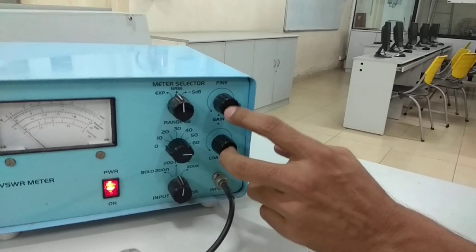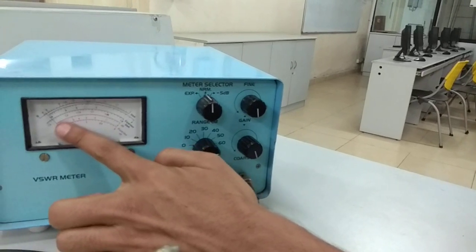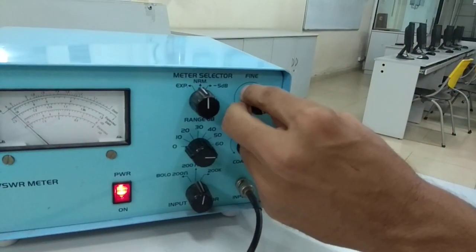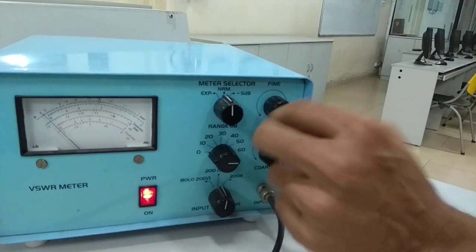These two are to maintain the gain. If we are not able to fix the knob at the higher position, we will be rotating this gain knob and we can make fine tuning by adjusting these two knobs.